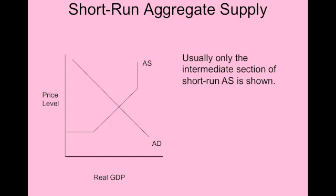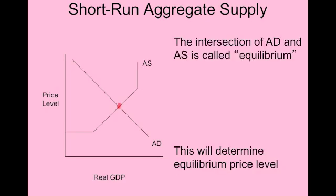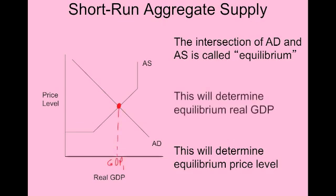So that's the three sections of aggregate supply. For this unit, you need to draw all three parts, so that I know you understand there are three parts to short-run aggregate supply. Just like in the loanable funds market, where supply and demand intersect is equilibrium and determines the real interest rate. Where aggregate supply and aggregate demand intersect is also called equilibrium, and that determines the real GDP made and purchased in the economy, as well as the price level. Whenever you have an equilibrium point, make sure to draw a guideline over to the y-axis and label it, and down to the x-axis and label it.